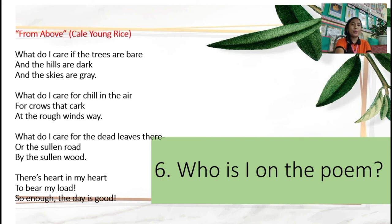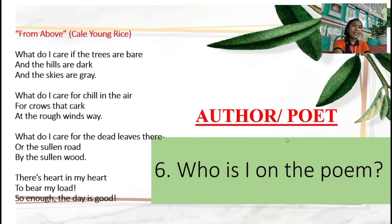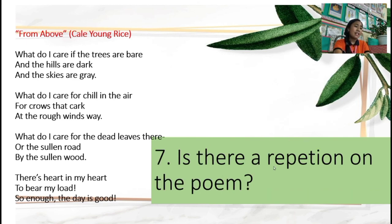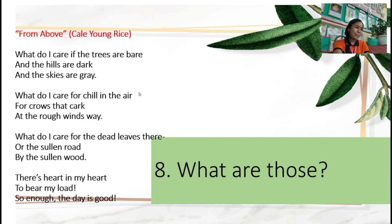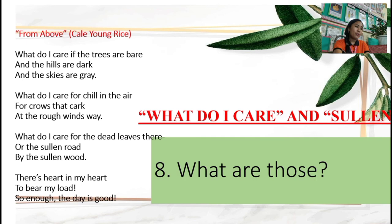Who is 'I' in the poem? The 'I' there is the author, or what we call the poet. Is there a repetition in the poem? Of course, yes. What are those? The phrase 'what do I care' repeats — in the first stanza, second, and third. So that is the repetition. Another one is the word 'sulan,' which appears in the third stanza, written in two lines.